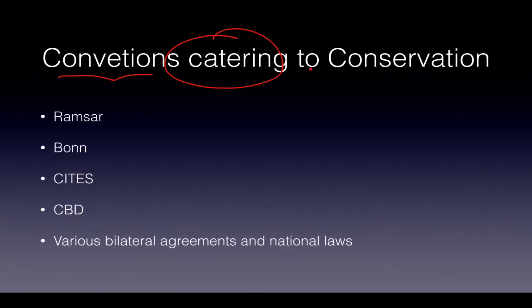There are various conventions catering to the conservation of biodiversity. RAMSAR deals with wetland conservation, the Bonn Convention is on migratory species, CITES is on endangered species and international trade, and CBD is the Convention on Biological Diversity. There are also various bilateral agreements between countries as well as national laws which govern them.